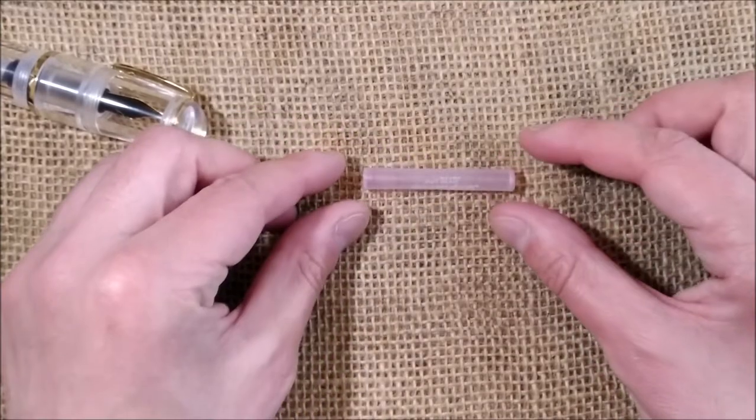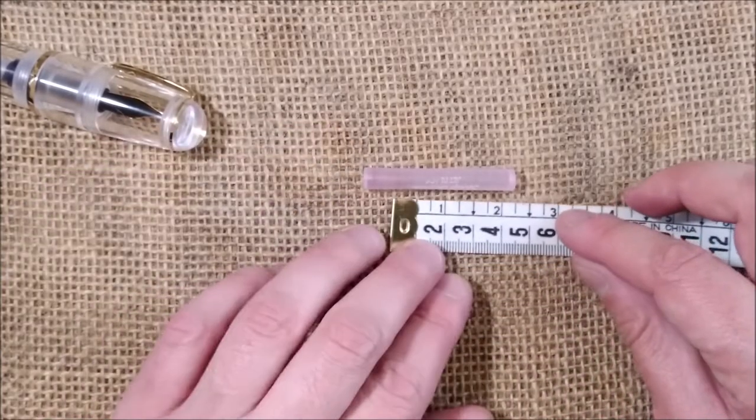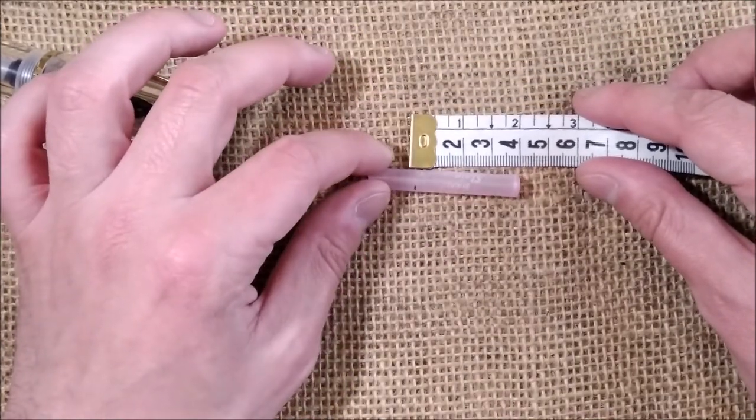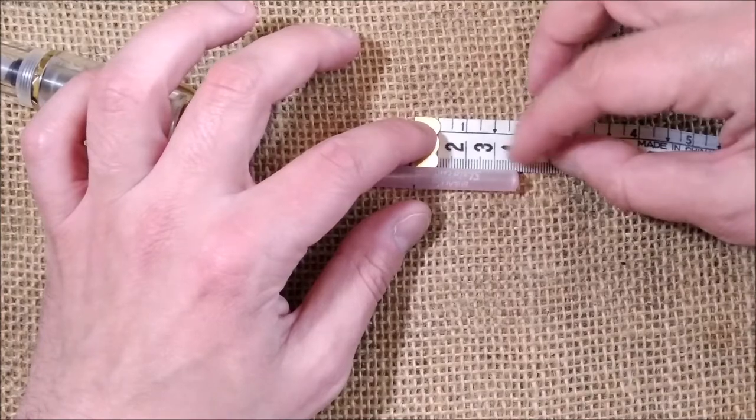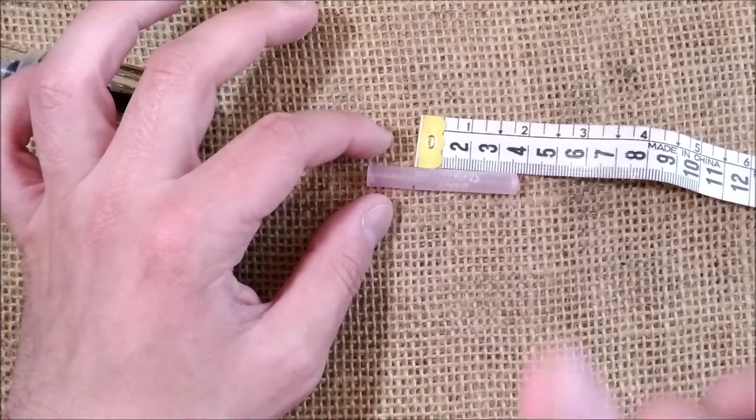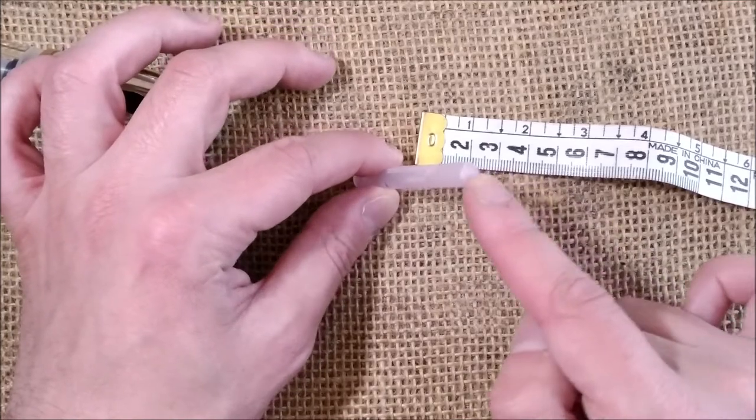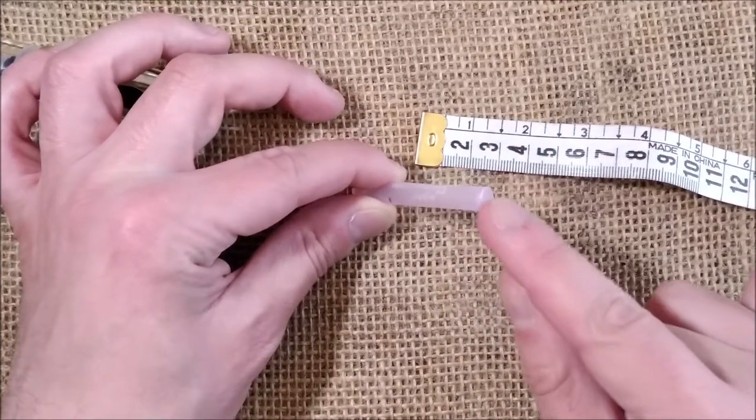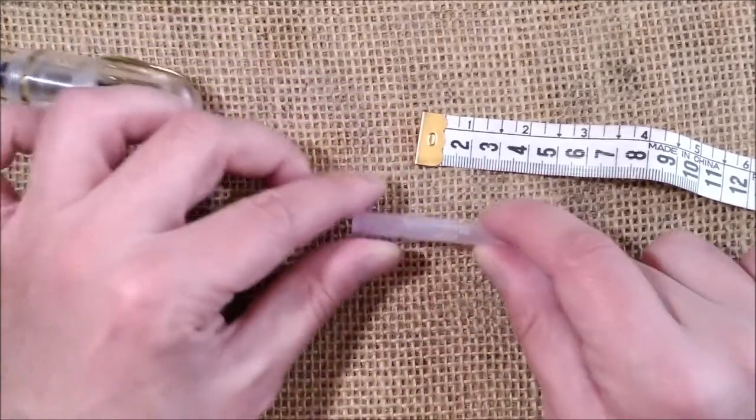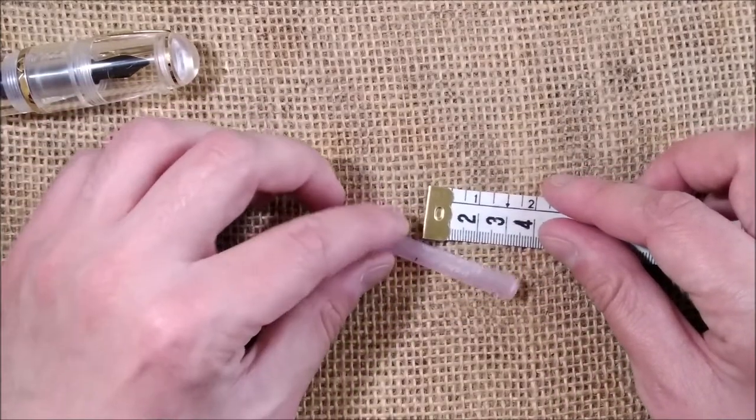So you have these and then you pick up your tape or your ruler and you will measure around 3.8 cm more or less and you will mark it. But you will measure 3.8 cm from starting on the closed part of the cartridge, not this one. So you do 3.8 cm there and then you make a mark.